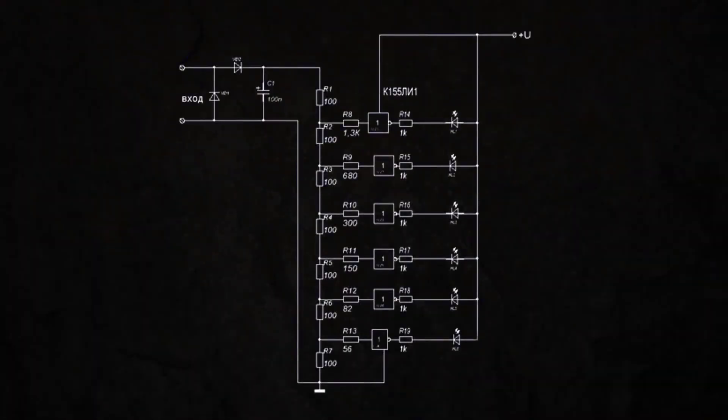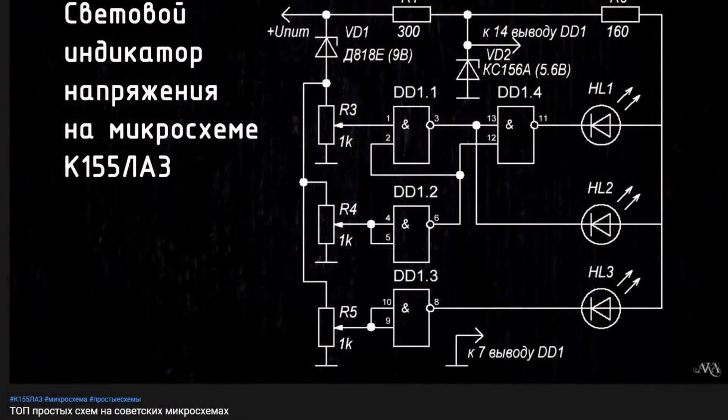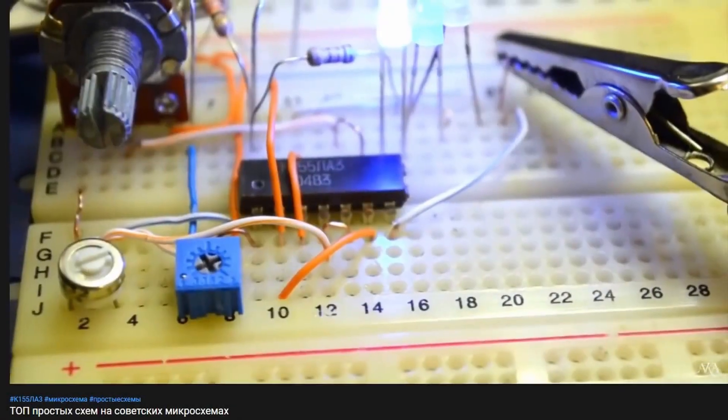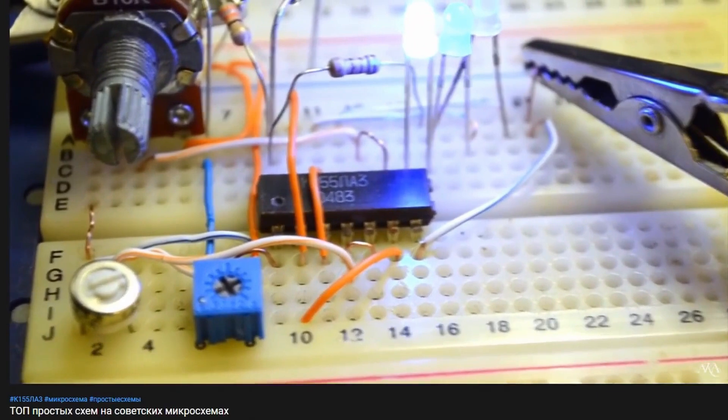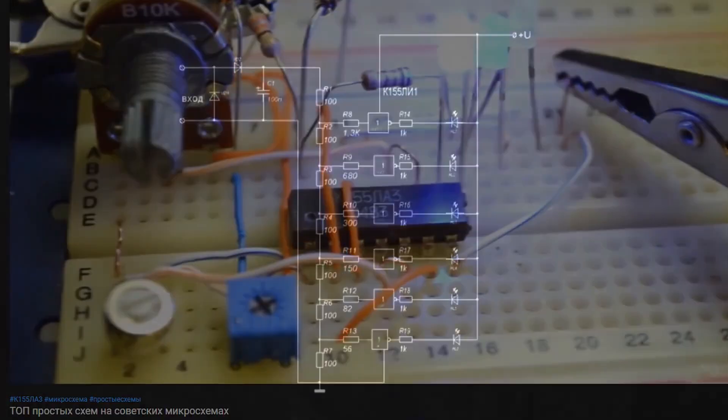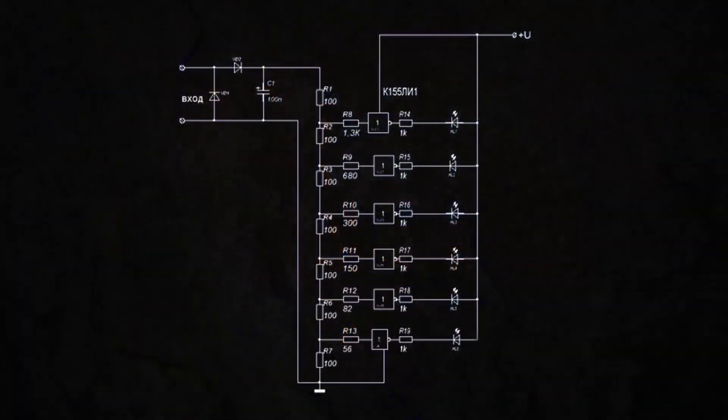We looked at one approach in another video, where each logic element is used as a comparator set to trigger at a logic-high level. By using a Schmitt trigger chip, you can get up to six outputs from a single chip. The complexity of this approach lies in the individual adjustment of each resistive divider.